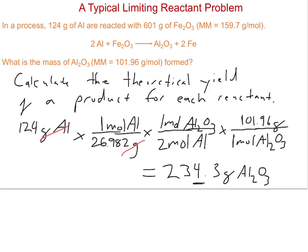Then we repeat the process for the other reactant, Fe2O3. We have 601 grams of Fe2O3. One mole weighs 159.7 grams, given to us in the question. Then, using our molar ratios from our balanced chemical equation, we have one mole of Fe2O3 when it reacts will produce one mole of aluminum oxide.